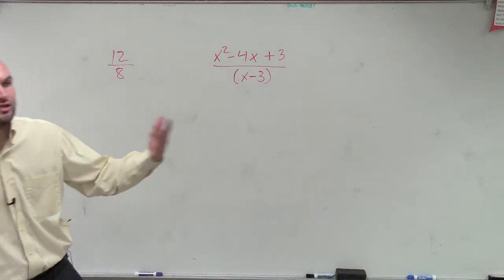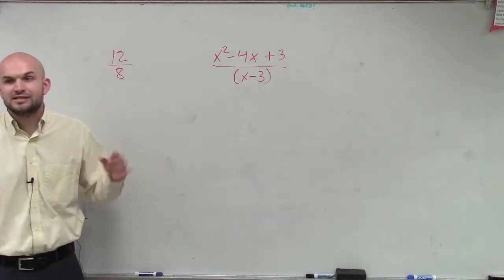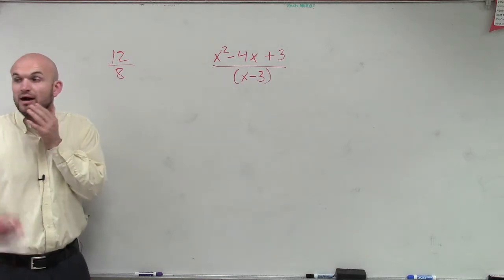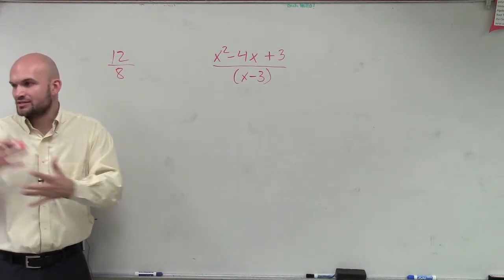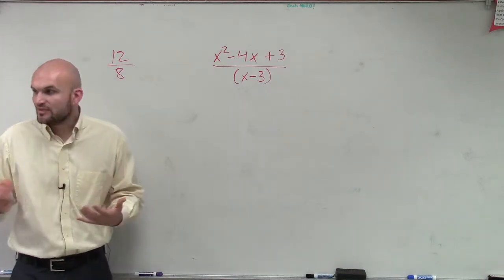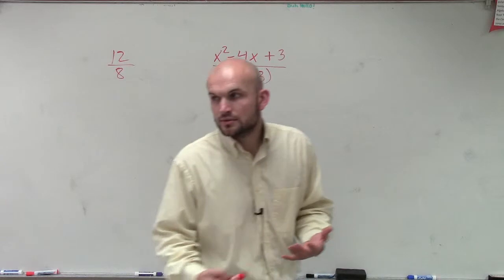So, what have we previously learned that we can do with 12 divided by 8 to simplify it? One and a half. But, what am I doing, though, before I get to that answer? Like, how am I doing it? How am I simplifying? So, how am I reducing it? Greatest common, too.